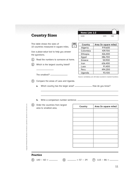Hi boys and girls, it's Mr. Wassman and we are looking at the home links from unit 1 lesson 2, country sizes. This is dealing with comparing and ordering large value numbers with multiple digits.